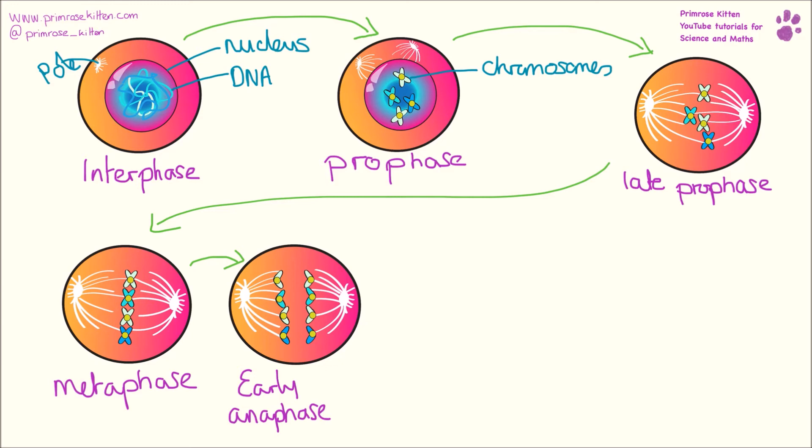The spindle poles will then pull each half of the chromosome to one side of the cell.